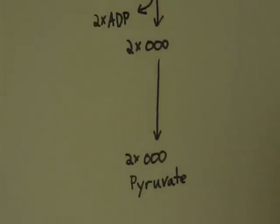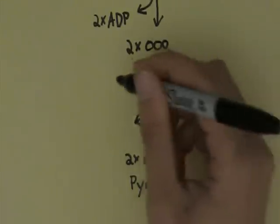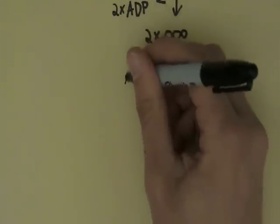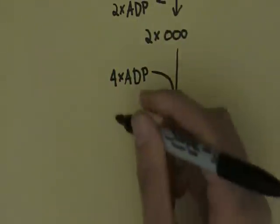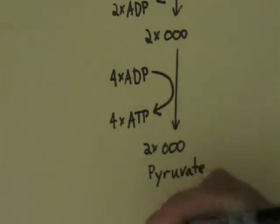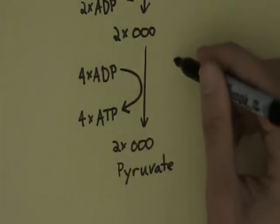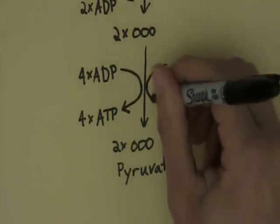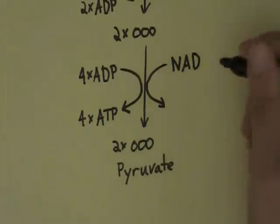This series of reactions releases energy now in two forms. One is in the form of ATP. Four molecules of ADP are transferred into four molecules of ATP. Remember, ATP is the cell's favorite energy currency. It provides just the right amount of energy for lots of different reactions in the cell to take place.